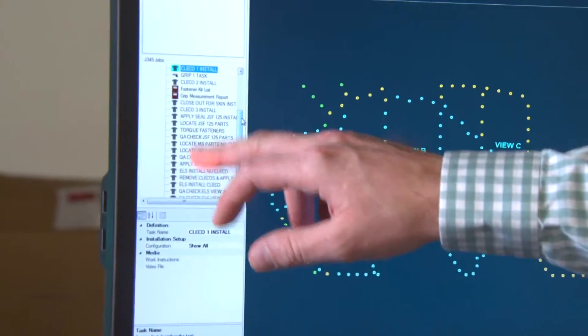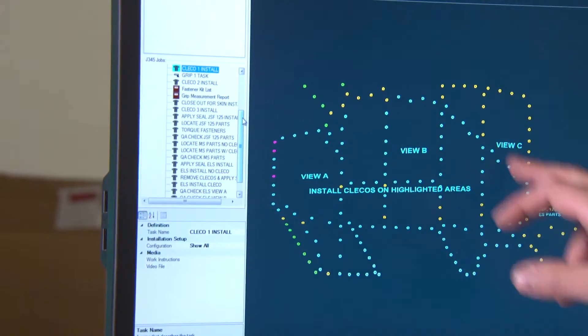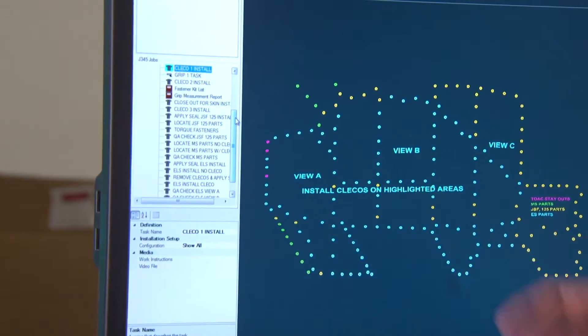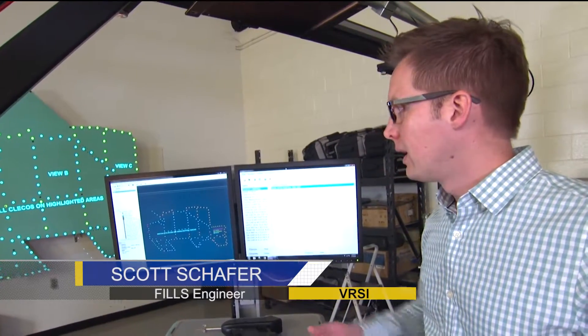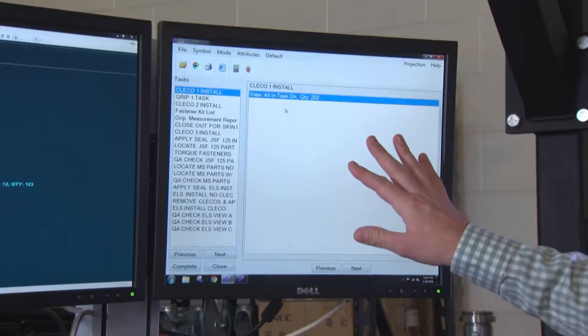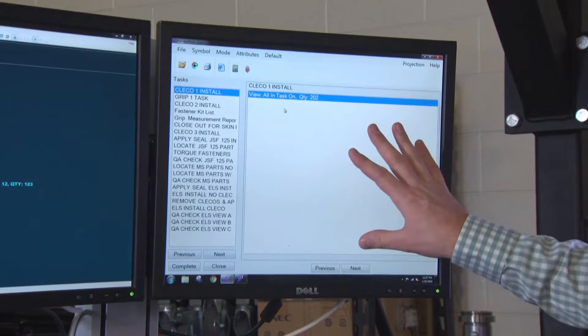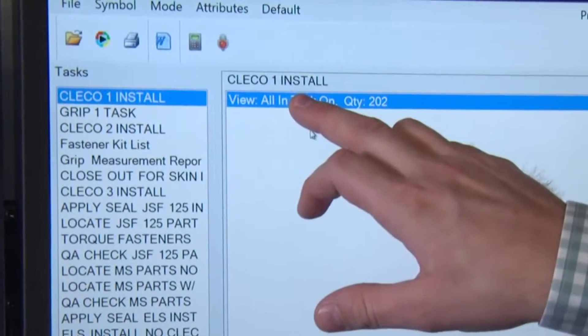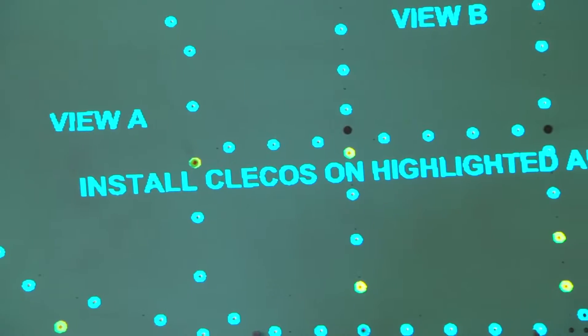On the left-hand screen, we have manuscript. That is the environment in which a mechanical engineer would author the work instructions for the projection work system. On the right-hand screen is Assembly Works Operator to access the work instructions. Whatever is highlighted here ends up being projected onto the aircraft.